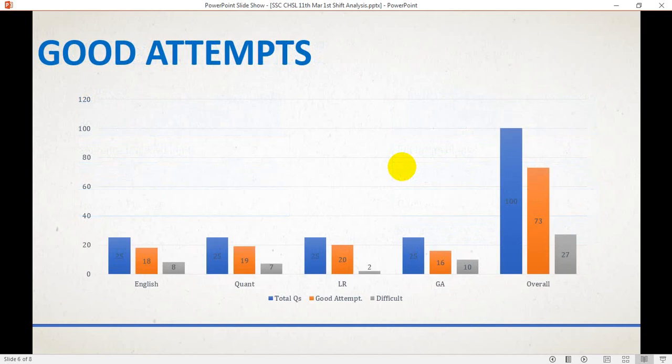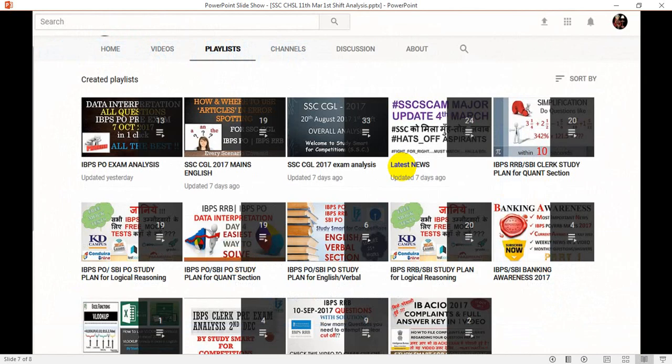Good attempts: for English, total questions 25, good attempts were 18, difficult were 8. For quant, total 25 questions, good attempt 19, difficult 7. Logical reasoning: 25 questions, 20 good attempts, 2 difficult. General awareness: 25 total questions, 16 good attempts, 10 difficult. So total 100 questions, 73 good attempts, and 27 difficult to attempt.